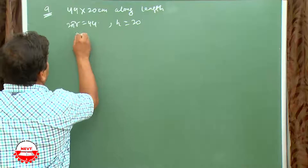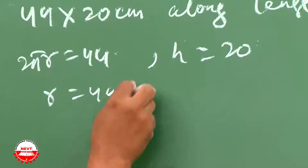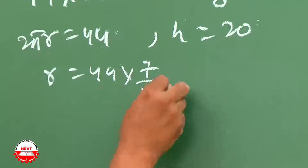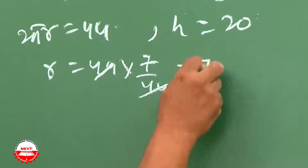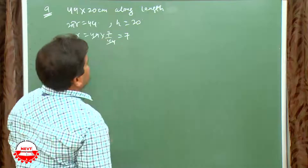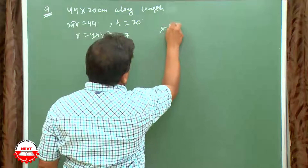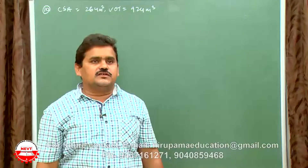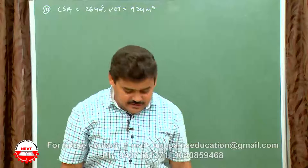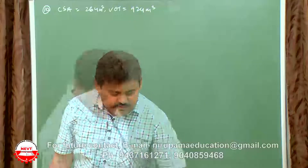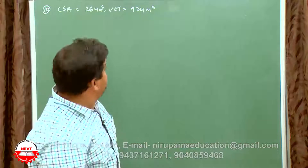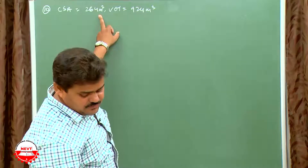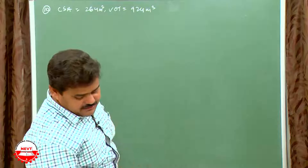So 2πr = 44, giving r = 44 × 7/44 = 7, and h = 20. Now find the volume using πr²h.